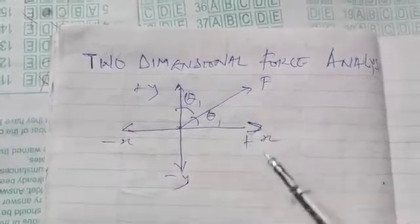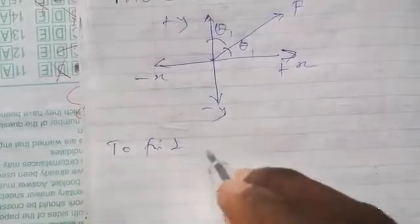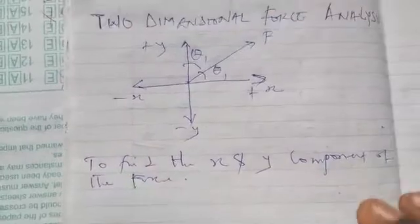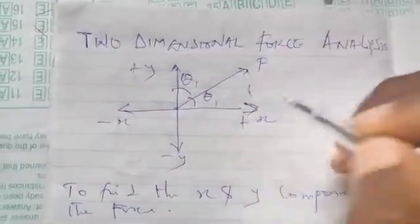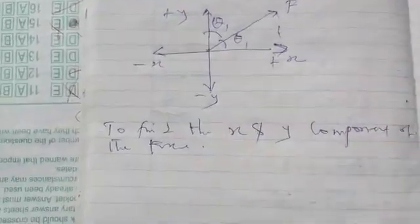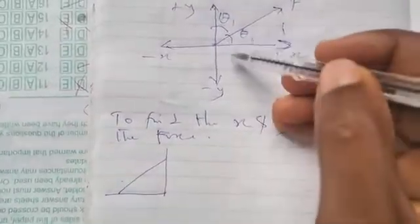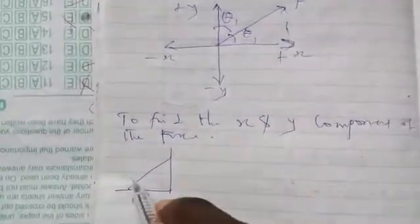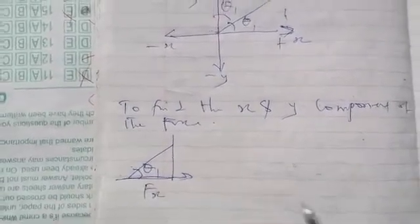Now if I want to find the X and Y components of the force F, I can draw an imaginary line from here and this automatically becomes a right-angle triangle. I can pull out this right-angle triangle and I have something like this. This angle here is theta 1 — remember we have two angles, one to the horizontal and one to the vertical. So if we pull out from here to this point, that means we're making use of theta 1. The angle here is simply theta 1, and this is the X component of force. Let's use F_x to signify it.